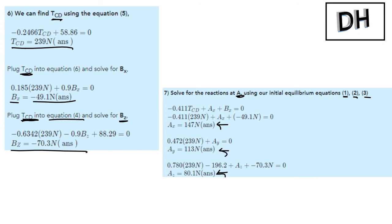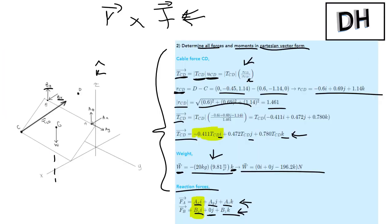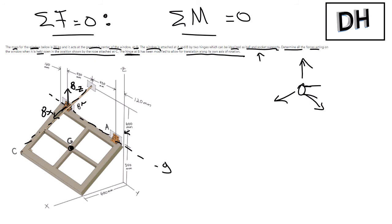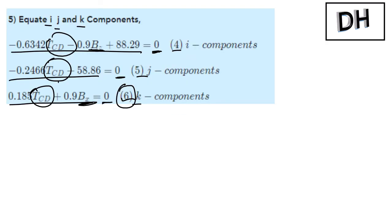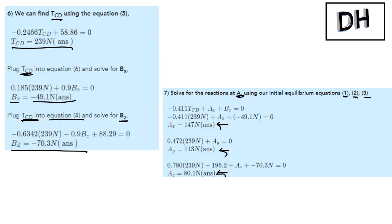So what have we just found here? We've determined all of the forces acting on the window — the reaction forces at A and B, and the tension in the cable. That's all, and I hope that helps.